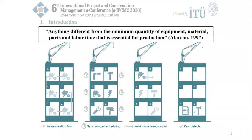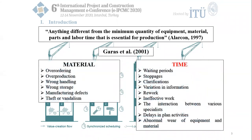In lean philosophy, waste is defined as anything different from the minimum quantity of equipment, material, parts, and labor time that is essential for production. Time-related wastes identified in the construction industry include waiting periods, stoppages, clarifications, variation in information, rework, ineffective work, the interaction between various specialists, delays in planned activities, and abnormal wear of equipment and material.